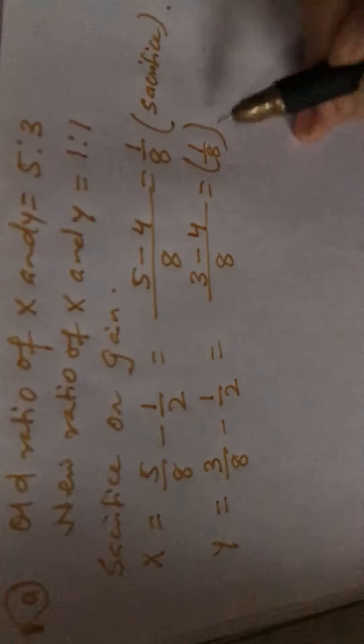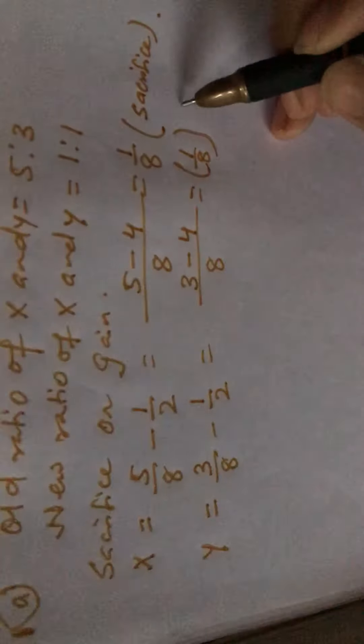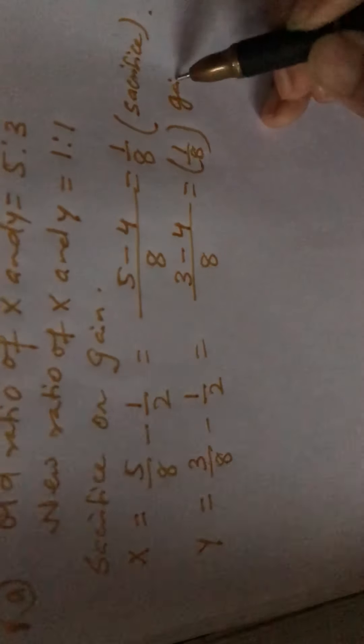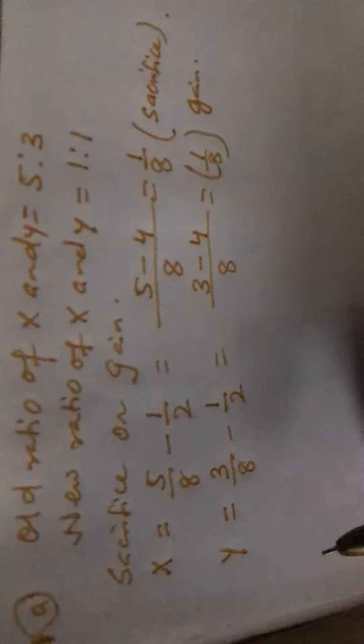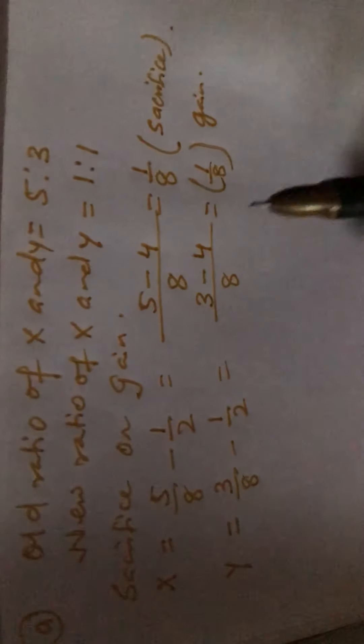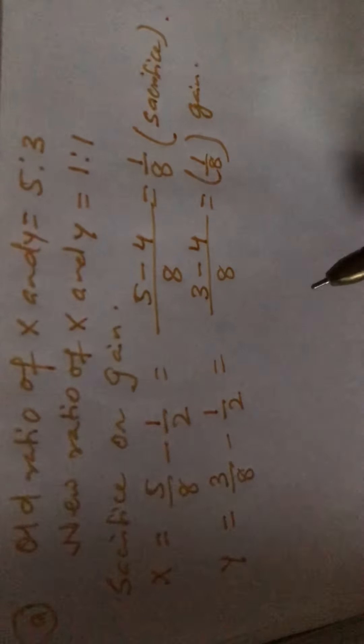That means here minus means what? Gain. Thus, X has sacrificed 1 by 8 here and whereas Y has gained 1 by 8 here.